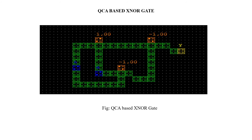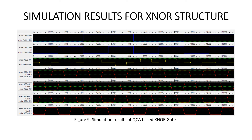For the QCA-based XNOR gate, the same logic is applied, but instead of taking the output directly, we complement the output. When the XOR gate is complemented, we get the XNOR gate output, which is the logical expression ĀB̄ + AB. The simulation results show input A and input B to the XNOR gate for different clocks — clock 0, clock 1, clock 2, and clock 3. When two inputs are the same for the XNOR gate, the output will be high; when two inputs are different, the output will be low.